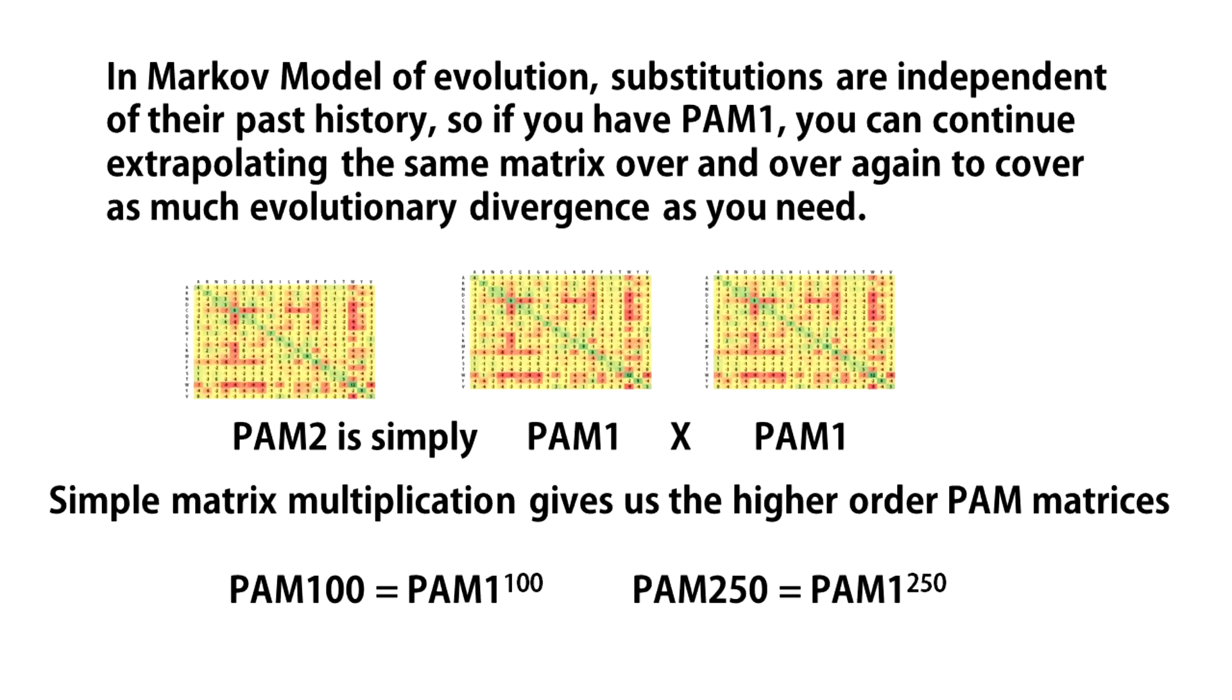In a Markov model of evolution, substitutions are independent of their past history. So if you have PAM1, you can continue extrapolating the same matrix over and over again to cover as much evolutionary divergence as you need. If you multiply PAM1 twice with itself you get PAM2. So simple matrix multiplication gives us the higher order of PAM matrices. PAM100 is PAM1 multiplied 100 times. PAM250 is PAM1 multiplied 250 times. So this is all about PAM matrices guys.